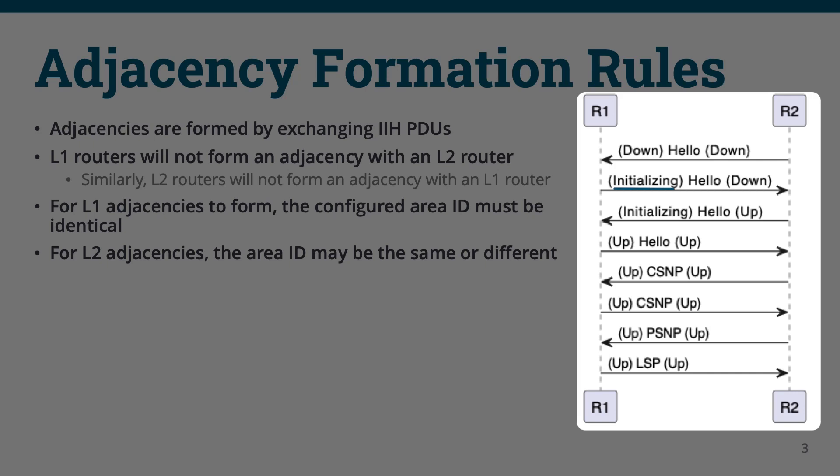In the next step, R1 has R2 listed as a neighbor in the initializing state and sends out an IIH PDU towards R2. In this IIH PDU, R1 will include R2's identifier, since it is now aware of R2.